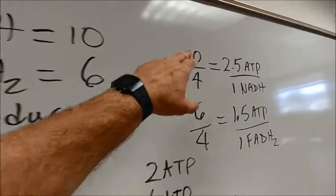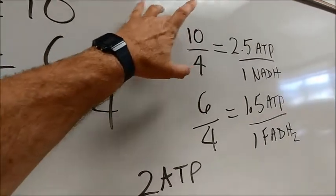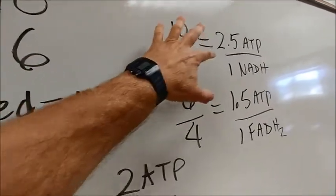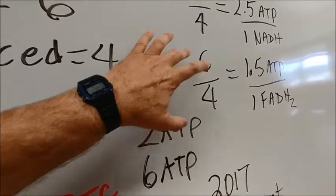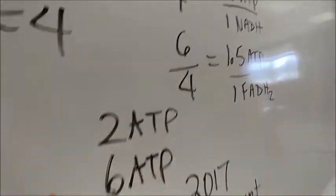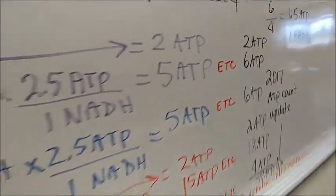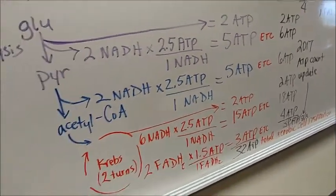So in each one of these conditions, if we take the niacin, the 10 divided by 4, we get 2.5 ATP generated. We look at riboflavin, 6 divided by 4 is 1.5. And that is the newer system that I am looking at now.